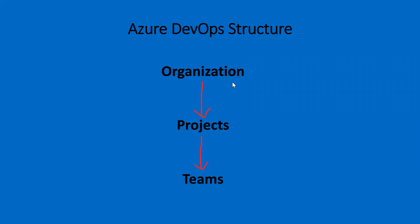You will create one organization, and under that organization you can create multiple projects, and for each project you can create multiple teams. This is the default structure and it is a strict structure — you have to follow it this way. You can either use the default organization that Azure DevOps creates for you, or you can create your own organization and then move ahead to create projects and then teams.